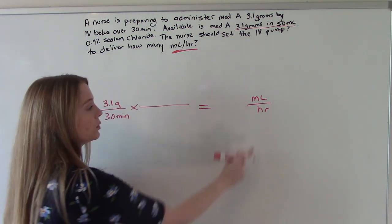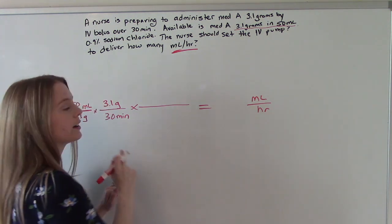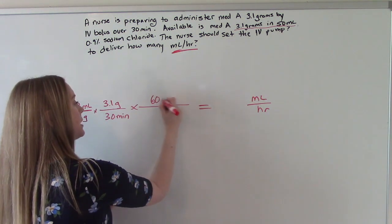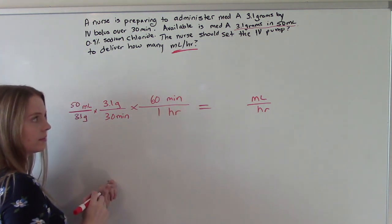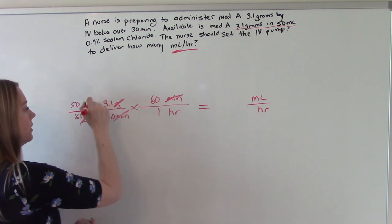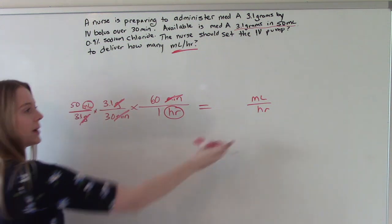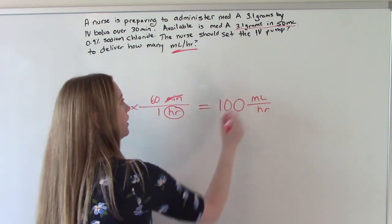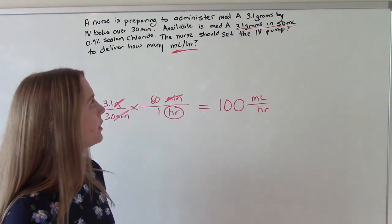And now the last thing we need to do is get hours in our denominator. How do we do that? By using the converting factor of hours to minutes. So we need to put 60 minutes equals 1 hour. So now our minutes will cancel. Our grams will cancel. This leaves us with mLs over hours, just like we wanted. And then you punch it in, you do the math, and you get 100. So we should set the IV pump to deliver 100 mLs per hour.